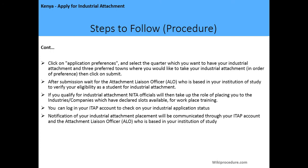After submitting, wait for the attachment liaison officer based in your institution to verify your eligibility as a student for industrial attachment. If you qualify, the National Industrial Training Authority official will place you in industry companies that have declared available slots for training. You can log into your ITAP account to check your industrial application status, and notification will also be communicated via SMS or email.